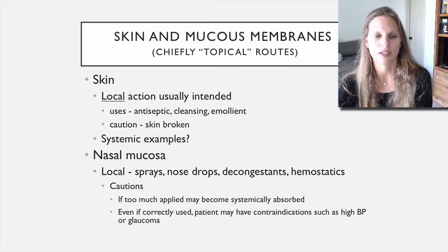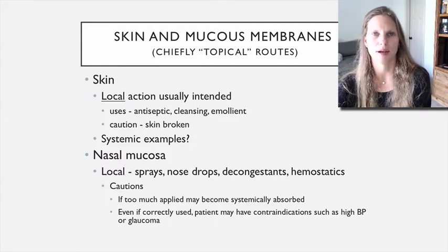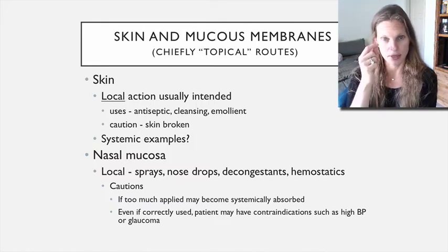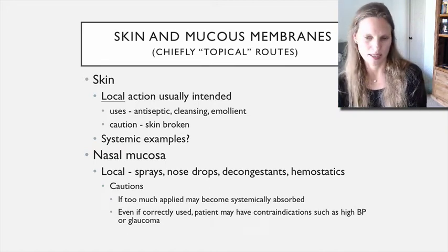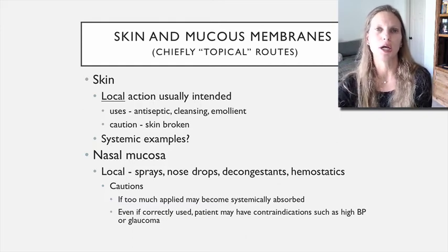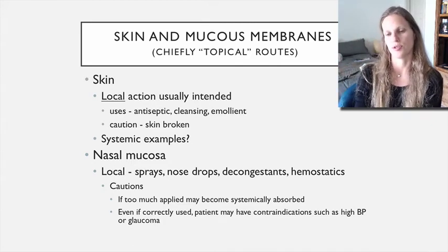As we get into individual units, we'll talk about potential contraindications. For example, agents sometimes used for glaucoma are used topically as drops, but they can have some systemic side effects. So if somebody has a condition like high blood pressure that could potentially be compounded by the application of these topical eye drops, you wouldn't want to use those for those patients.